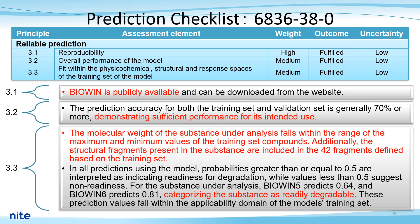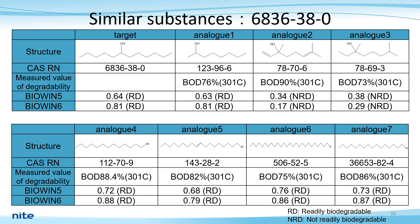For 3.4, an evaluation of the predicted results for similar substances was performed. The predicted results for the analogs are shown on this slide — this is the biodegradability results of experimental values and BioWin predictions for the target chemical and analogs. The analogs were predicted to be readily degradable and the predictions were found to be within the applicable range of the model training set. Furthermore, analogs containing tertiary alcohols were estimated not to be readily biodegradable, while the other analogs were estimated to be readily biodegradable. This point is described in 3.4.